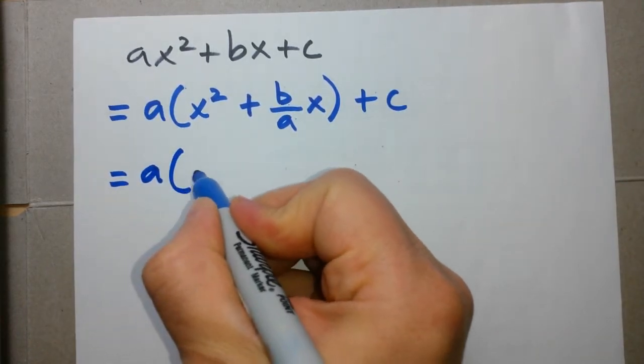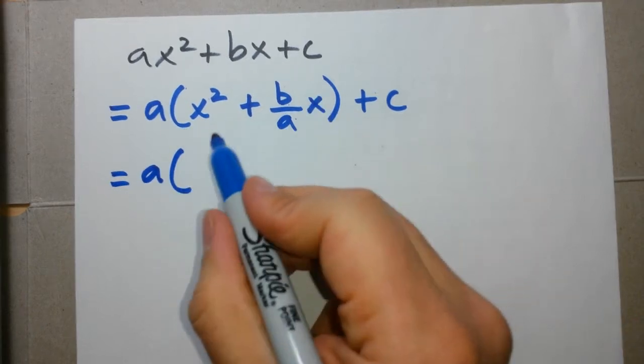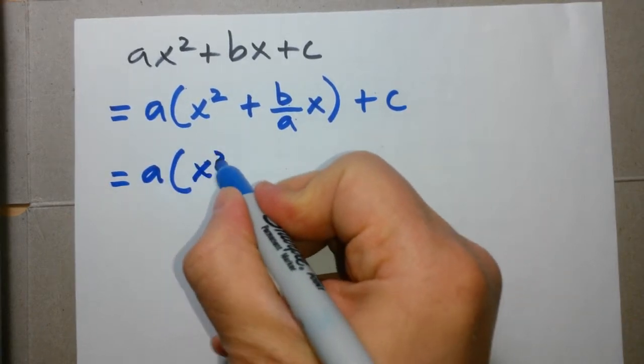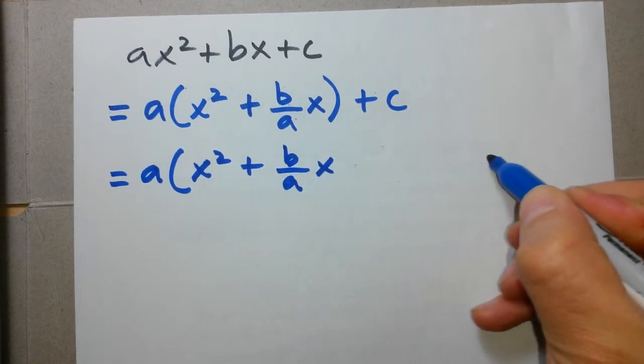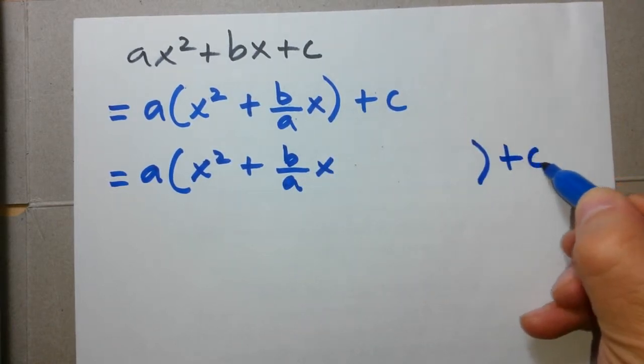The next line, we're going to turn this expression into a perfect square trinomial. So x squared plus b over a x, let's leave some space there, close bracket. Let's bring down the c.